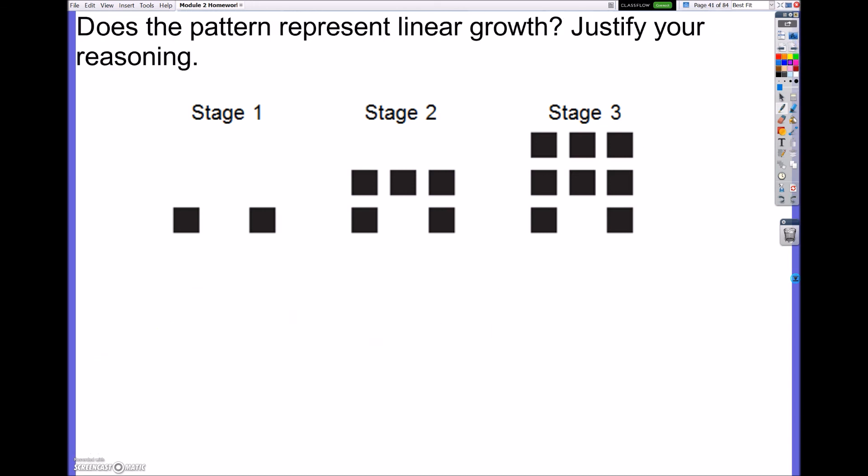So does this pattern represent a linear growth? And we would say yes, because it is always increasing by three, which is the rate of change. For instance, if I increased by three here and then over here I just started to add more blocks randomly, that would not be a constant rate of change, and therefore, it would not be a linear pattern.